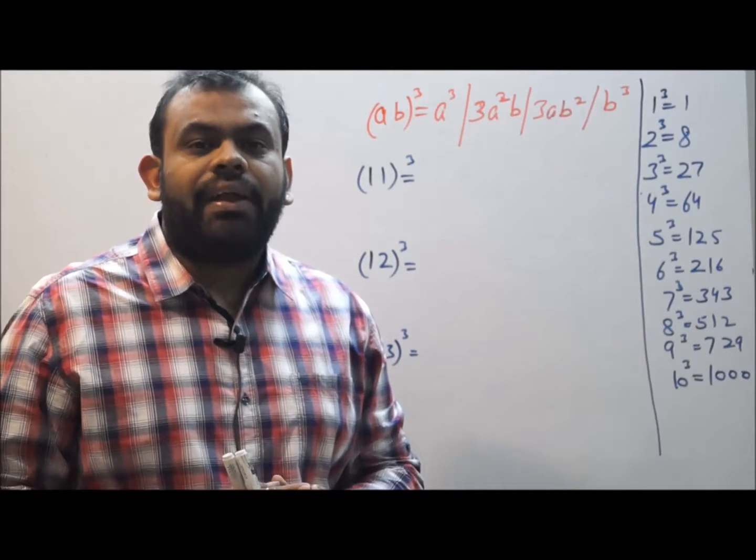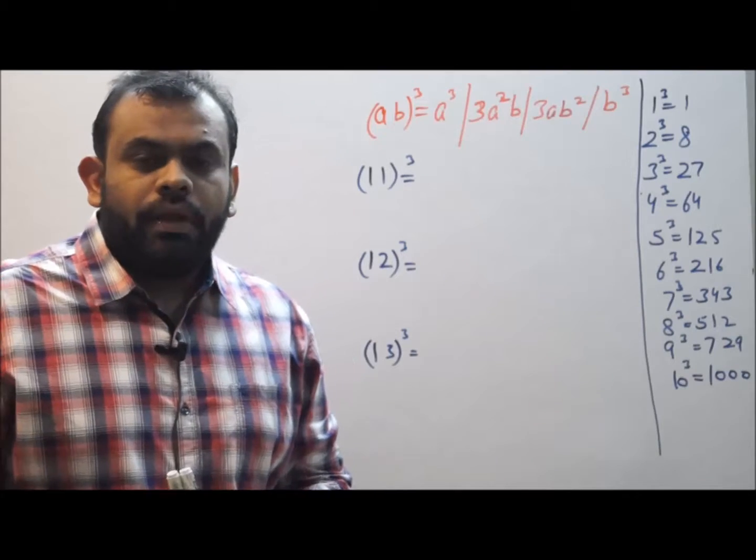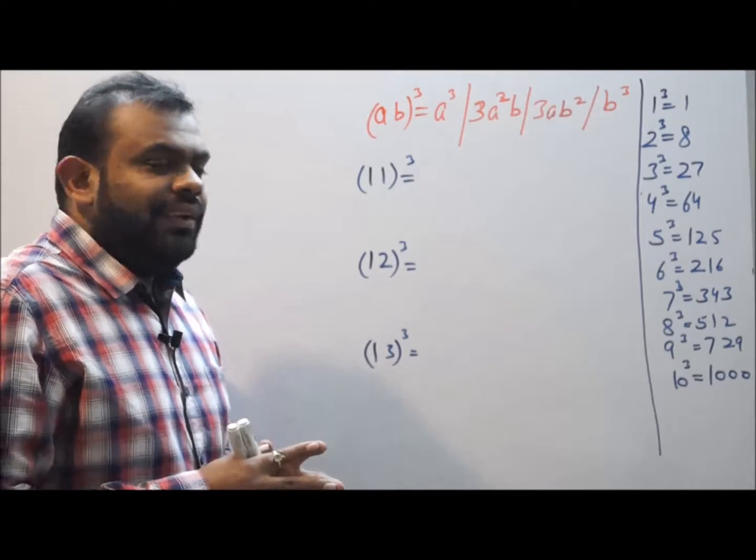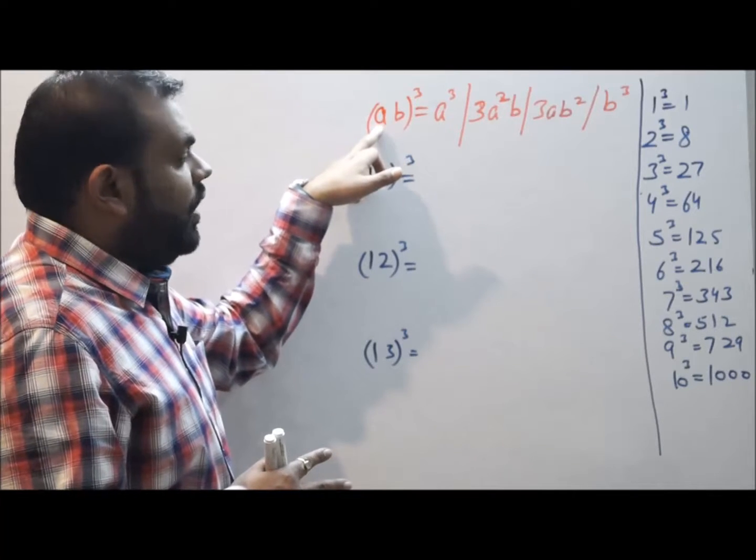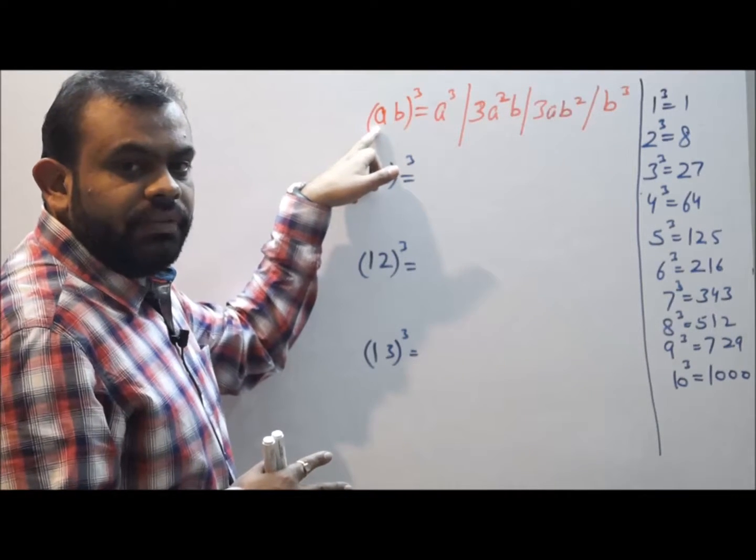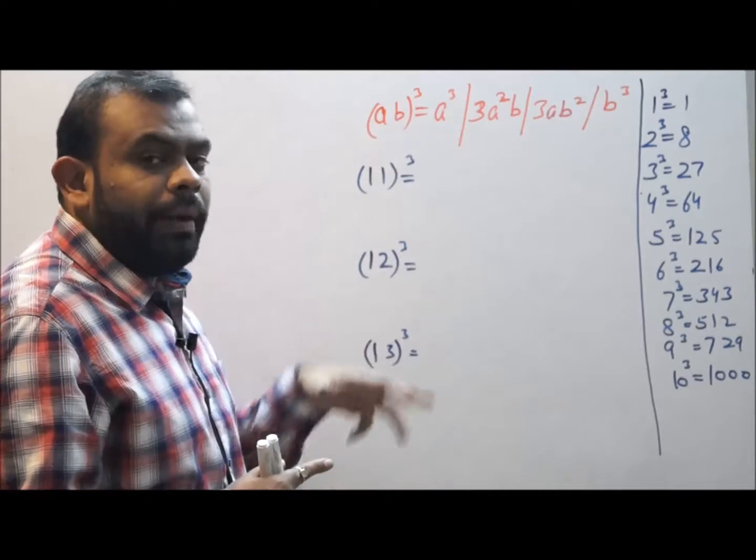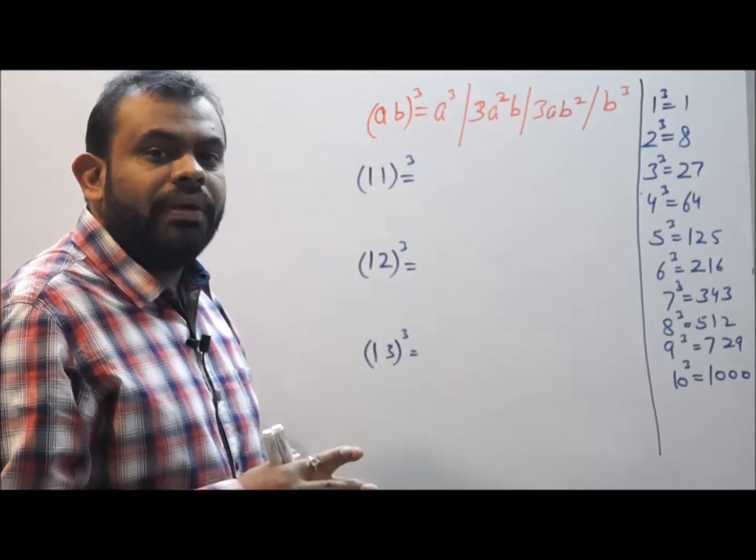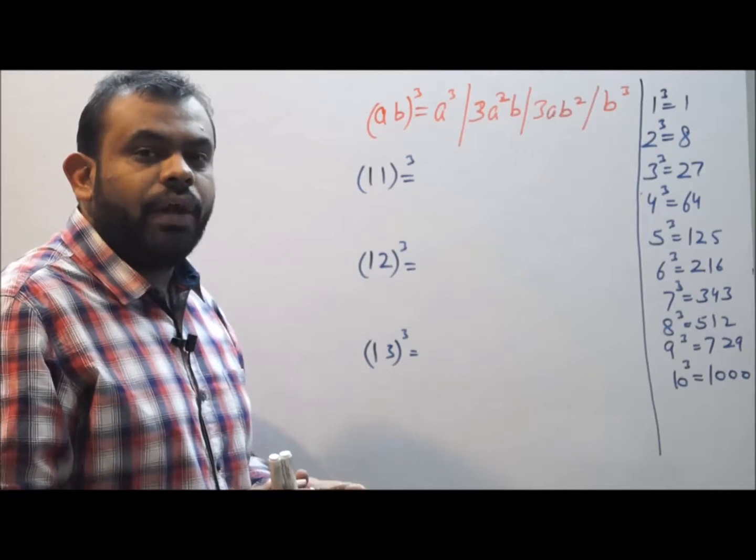Once you are done, kindly move on with the video and understand how to find the cubes of any two-digit number. Now to understand the concept, I have written any two-digit number in which the digits are being represented by a and b. I have to find the cube by multiplying these numbers three times with its own self and find out the answer.